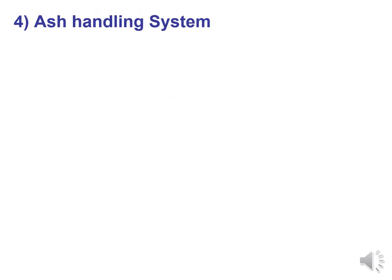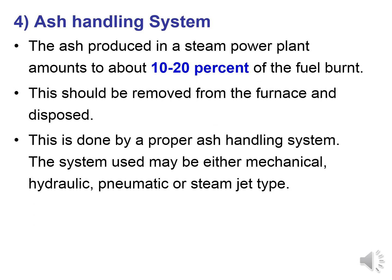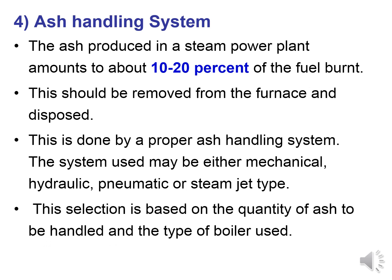Ash produced in a steam power plant amounts to 10 to 20 percent of the fuel burnt. This must be removed from the furnace and disposed of by a proper ash handling system. The system may be mechanical, hydraulic, pneumatic, or steam jet type. The selection is based on the quantity of ash to be handled and the type of boiler used.